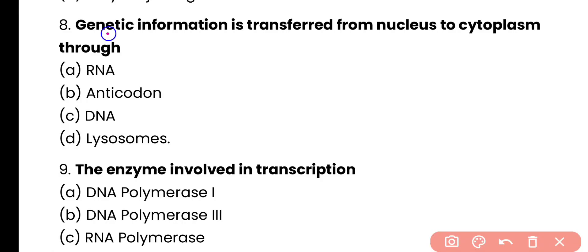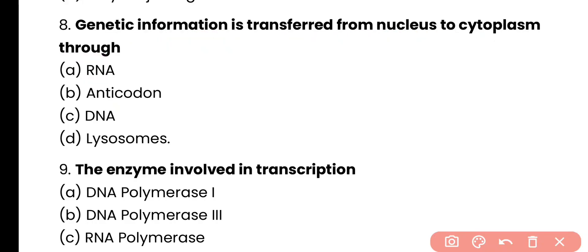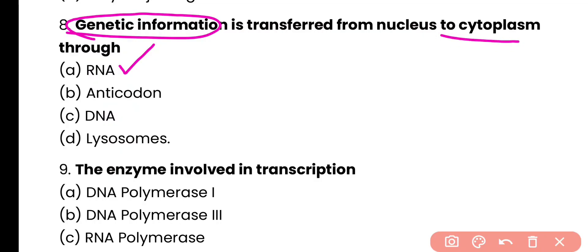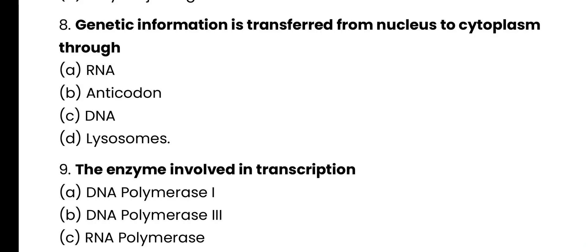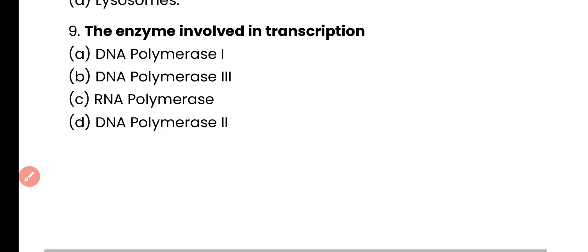Question number 8. Genetic information is transferred from nucleus to the cytoplasm through RNA, anticodon, DNA, or lysosomes? Correct answer is option A. RNA, especially messenger RNA, carries genetic information from the nucleus to the cytoplasm.